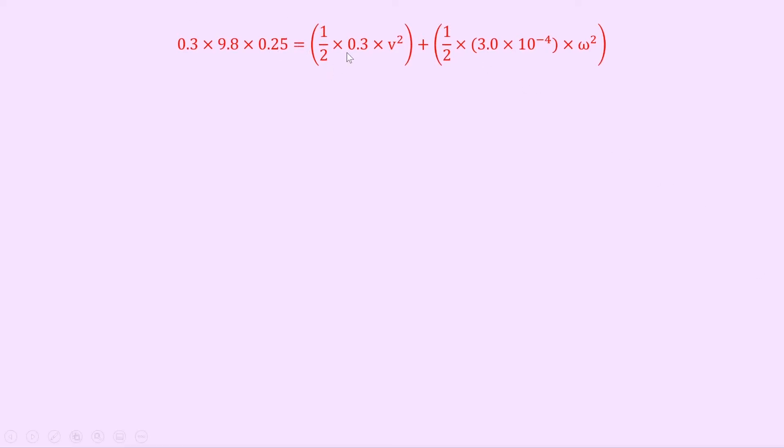Which is equal to half times 0.3 times v squared plus a half times 3.0 times 10 to the minus 4 times omega squared. Now remember that v is what we're trying to find, so we will want to do something with this omega shortly, but we can simplify all of this for now. So if we do that, we get 0.735 is equal to 0.15v squared plus 1.5 times 10 to the minus 4 omega squared.